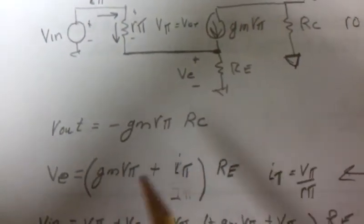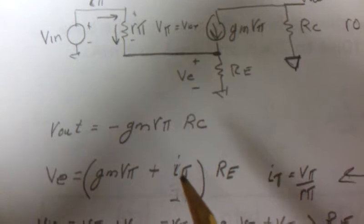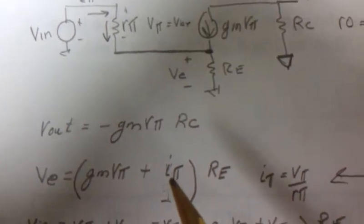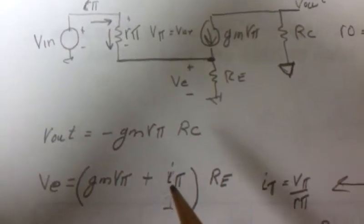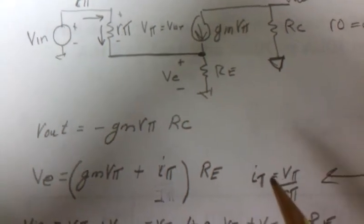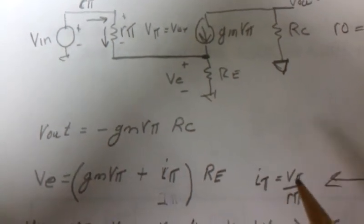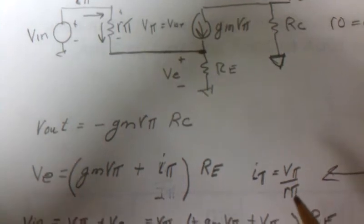This will be a less than this and so you could set this to zero right now and you'll get the same result at the end. But if we look at I pi and say that's V pi divided by r pi, we can say VN equals V pi plus V across the emitter resistor.